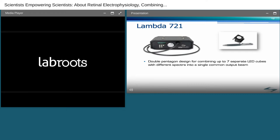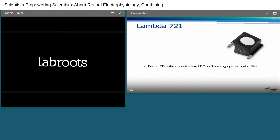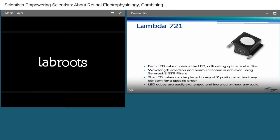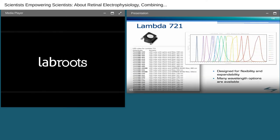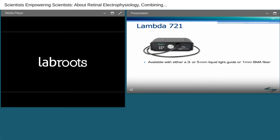The Lambda 721 uses a double pentagon design for combining up to seven separate LED cubes with different spectra into a single common output beam. Common applications include fluorescent microscopy, calcium imaging, FURA, optogenetics, and high-speed wavelength selection. Each LED cube contains the LED, collimating optics, and a filter. Wavelength selection and beam reflection is achieved using SEMROC STR filters. The LED cubes can be placed in any one of seven positions without any concern for specific order. LED cubes are easily exchanged and installed without any tools. The Lambda 721 was designed for flexibility and expandability. Should illumination needs change over time, simply ordering and installing additional LED cubes will produce an entirely different output.